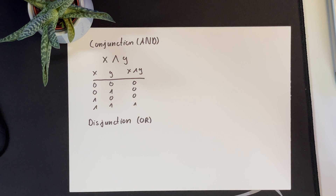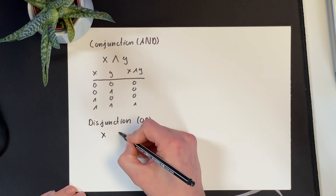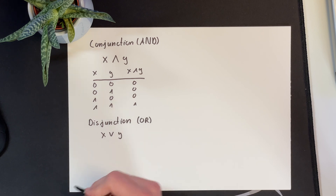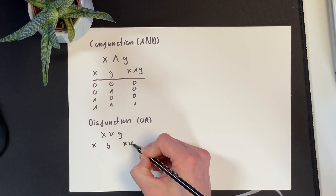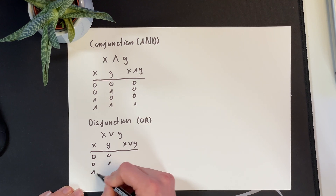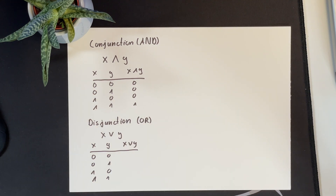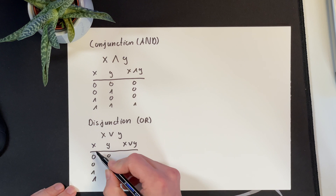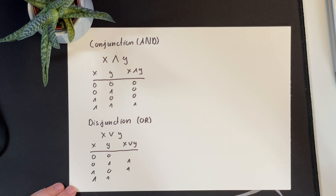The next Boolean algebra operation is the disjunction with its OR operator. The disjunction combines two Boolean expressions X and Y. In the truth table, OR is always true when at least one of the expressions is true. So 0 OR 0 is 0; 0 OR 1, 1 OR 0, and 1 OR 1 all result in 1. Only the top line where neither value is true results in 0.